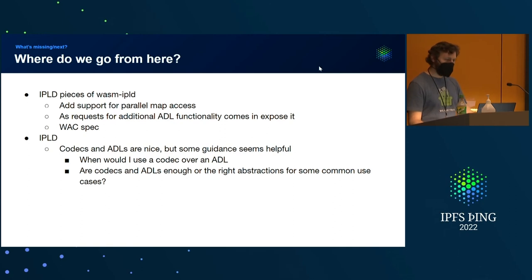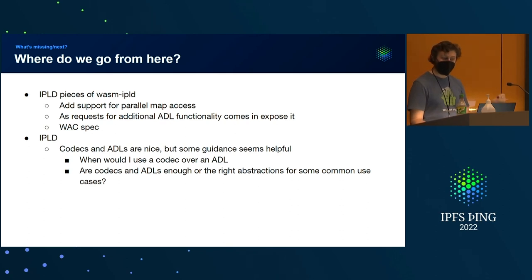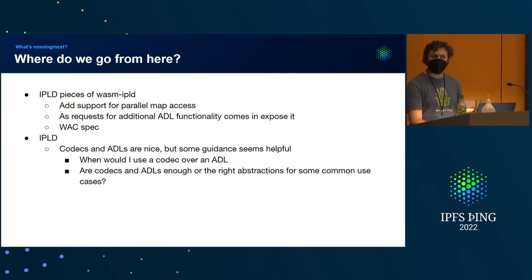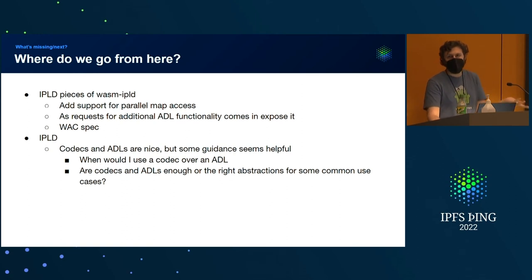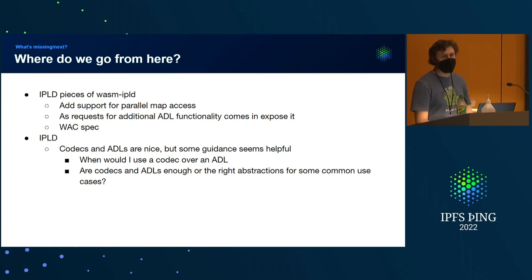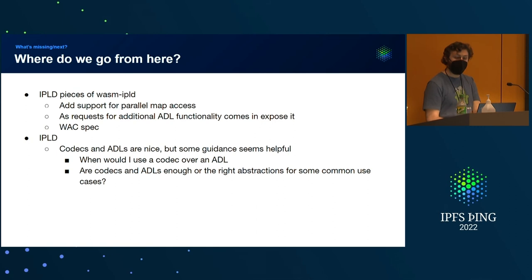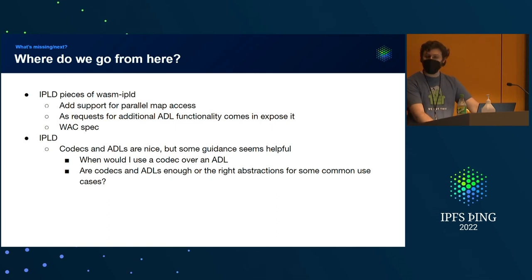Where do we go from here? For the IPLD pieces of WASM IPLD: parallel map access would be nice. As additional requests for ADL functionality come in, we expose it — wait for the needs to come in and then expose more functionality on the WASM implementation side. On the IPLD side, codecs and ADLs are nice but some guidance might be useful. Like, when do I use a codec over an ADL? Are codecs and ADLs the right abstractions? Do I need more, or different ones?